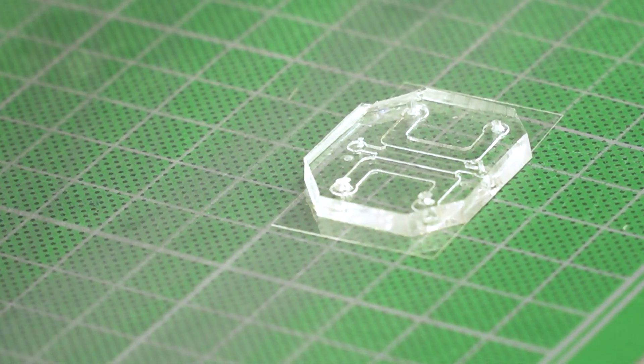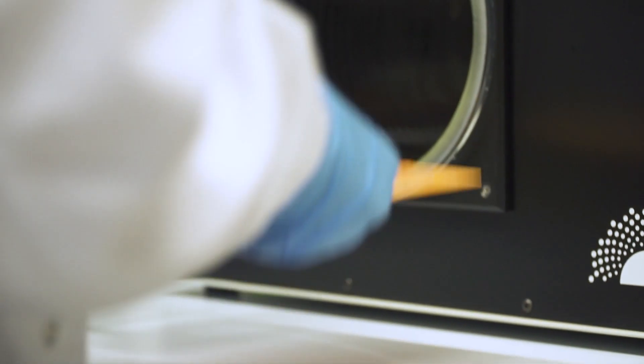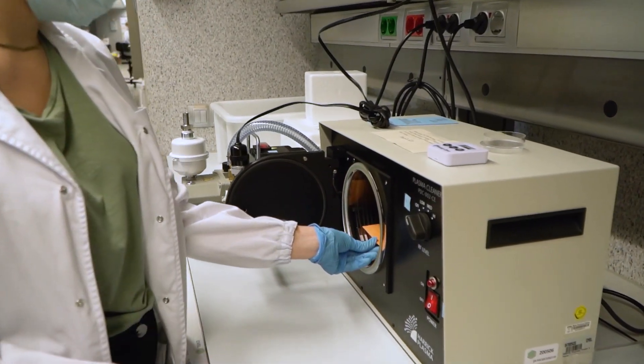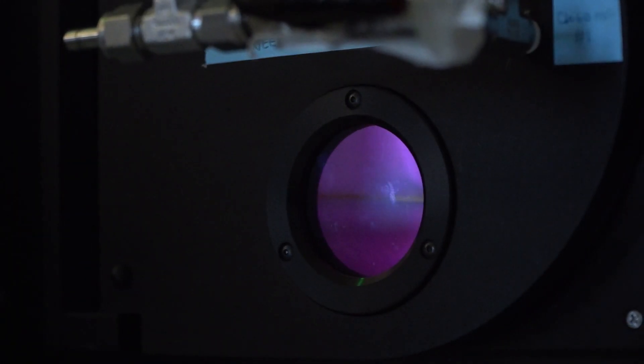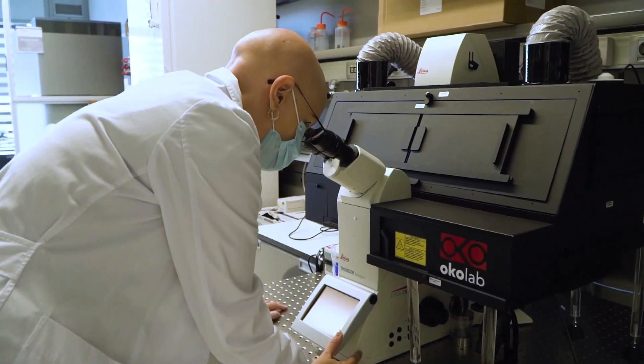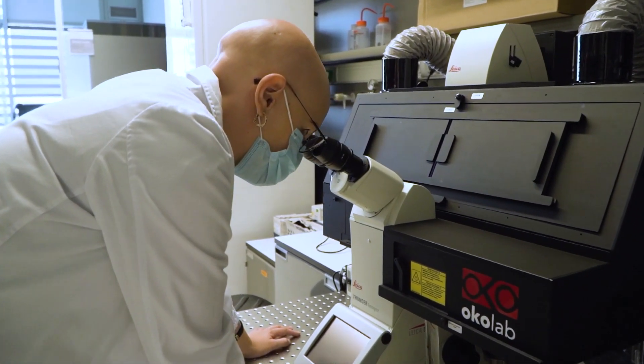Then we bond the device on a glass coverslip with air plasma. The optical and oxygen properties allow us to check the cells inside the device with any inverted microscope.